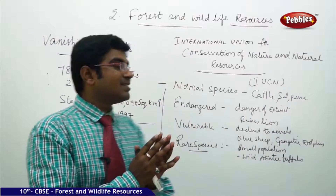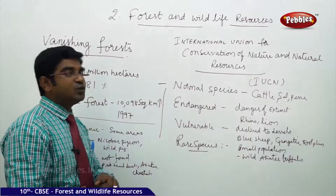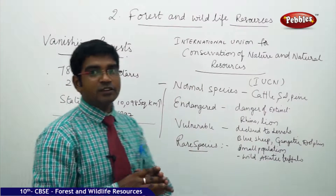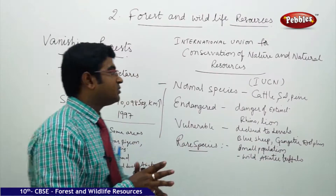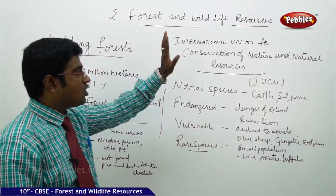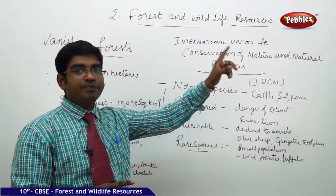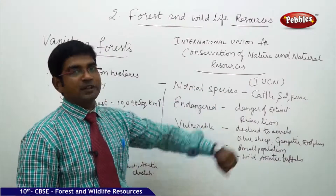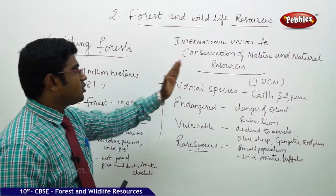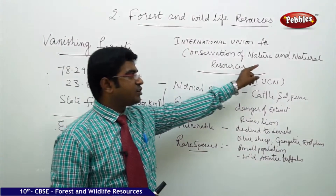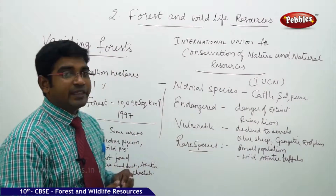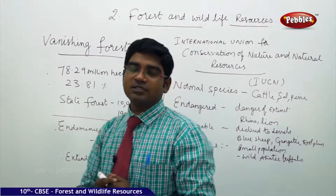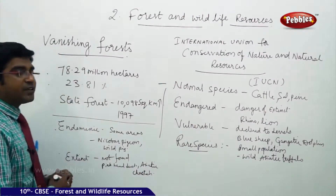Based on the calculations and statistics of the International Union for Conservation of Nature and Natural Resources — known in short as IUCN — there is an international body to look after all these matters. The IUCN has categorized the entire flora and fauna broadly into six different types.